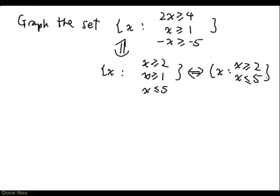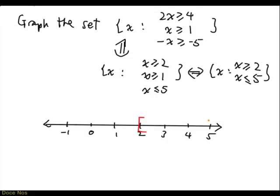So basically it amounts to graphing this set: the set of x greater than or equal to 2 and at most 5. And we can do that again on the number line, and everything from 2 to 5 included, so all these points in this interval.